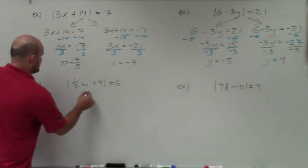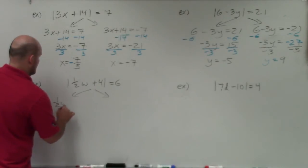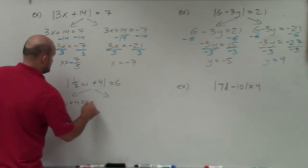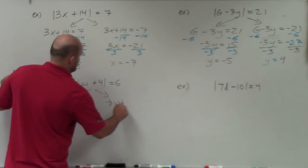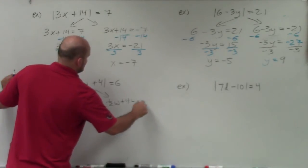Now again, we'll just go and do it. Positive and the negative. 1 and a half w plus 4 equals 6. 1 and a half w plus 4 equals negative 6.